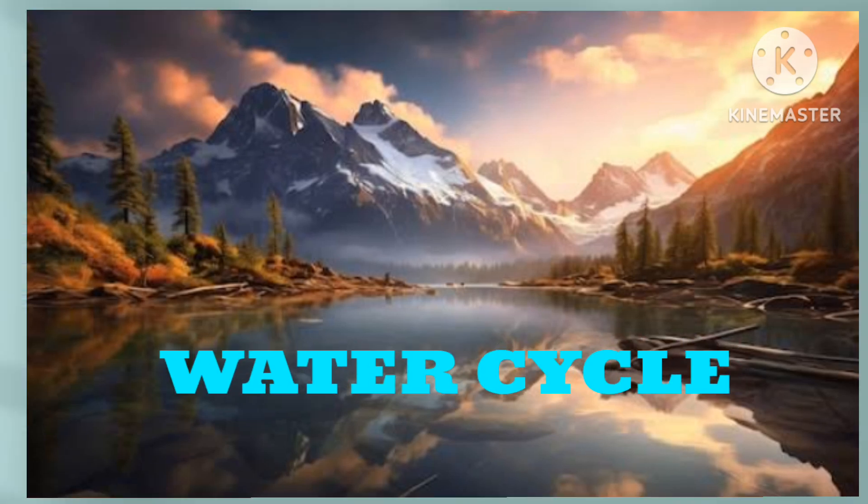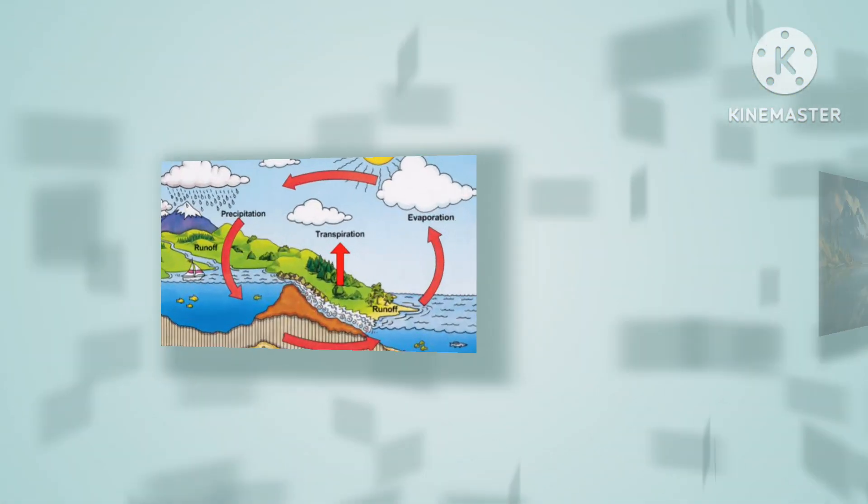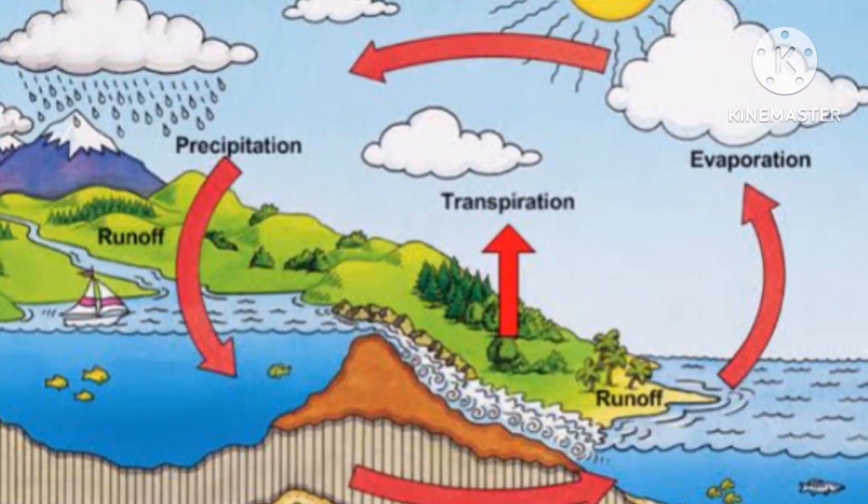Let's get started. The water cycle is a continuous movement of water within the earth and the atmosphere. It is a complex system that includes many different processes.